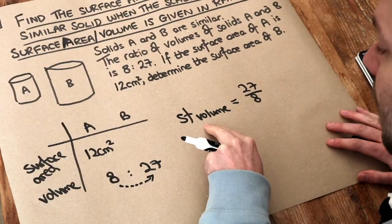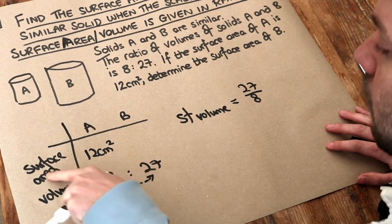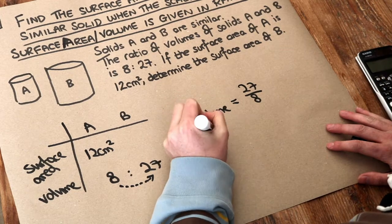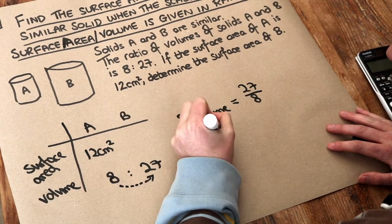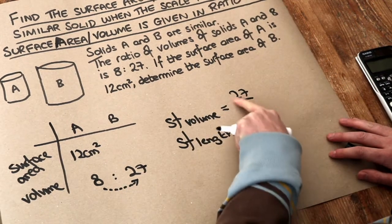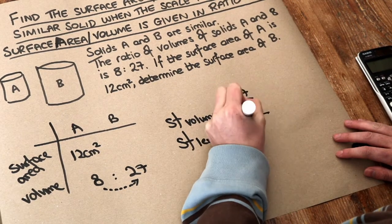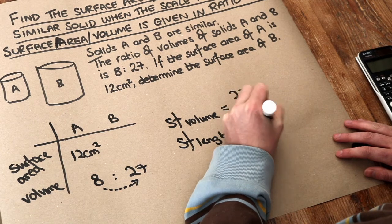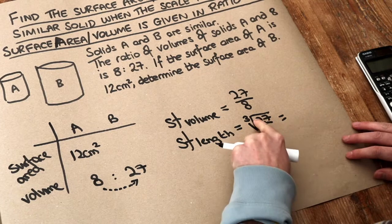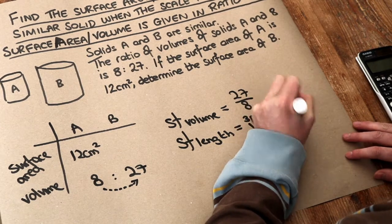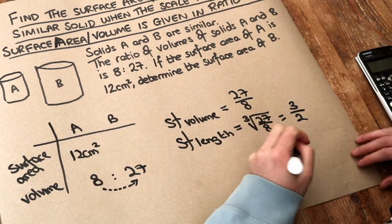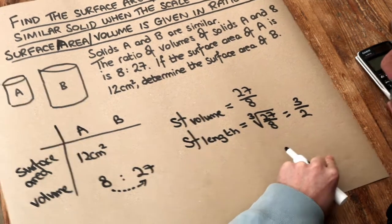Now remember, if we had the scale factor of volume it was quite difficult to go directly to the scale factor of surface area, but we could first find the scale factor of length, for example height. What we did is we took the scale factor of volume and cube rooted it. So we did the cube root of 27 over 8. Now conveniently, 27 and 8 are both cube numbers. When you cube root 27 you get 3. When you cube root 8 you get 2. So the scale factor of length, which might be height for example, is 3 over 2 or 1.5.